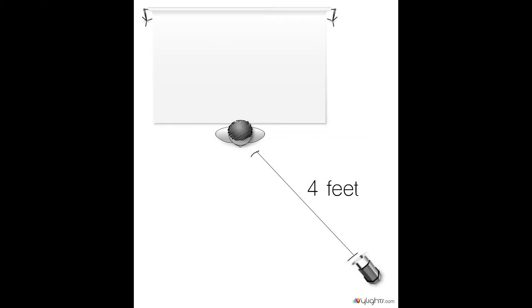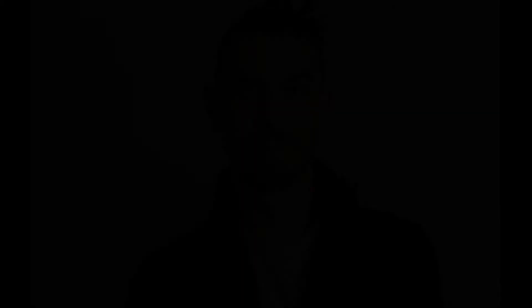For our last image, I'll move the source twice its distance again, which is four feet away. Light remains at the same power, but once again different camera settings — from f/8 to f/4 to compensate. Now if we put our three images together, we can see that even though the intensity is the same, there is something different in the scene.